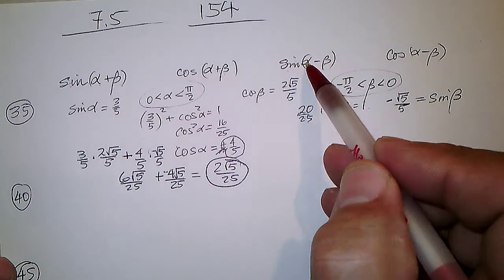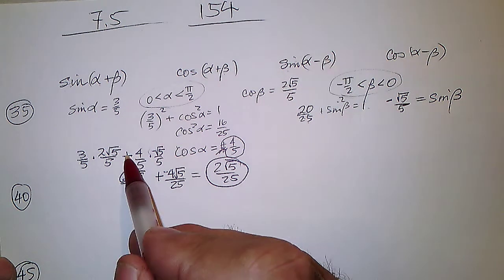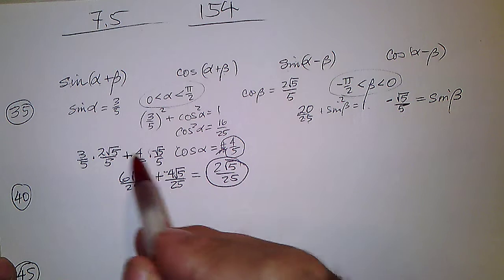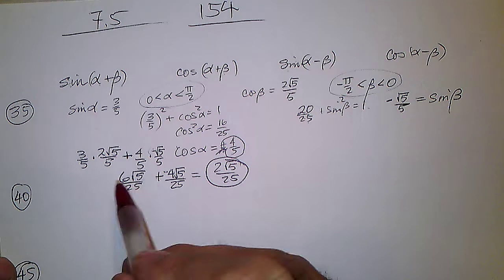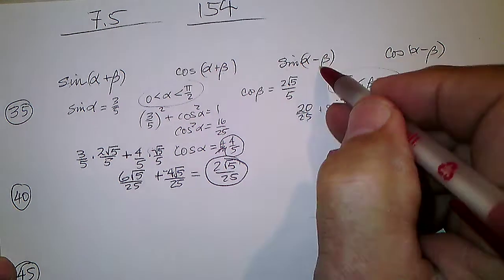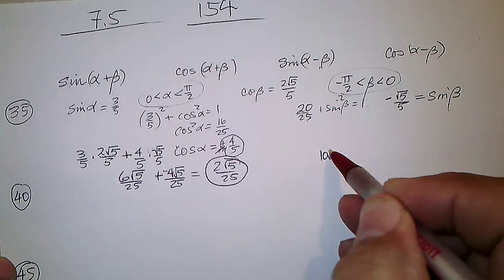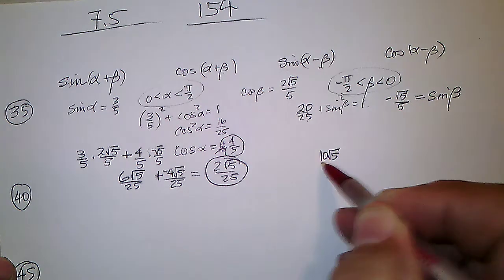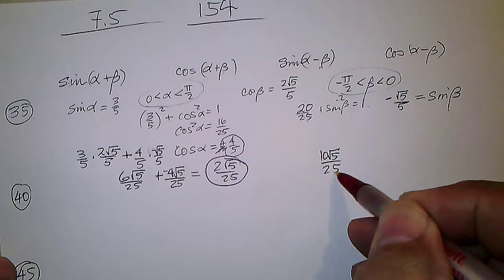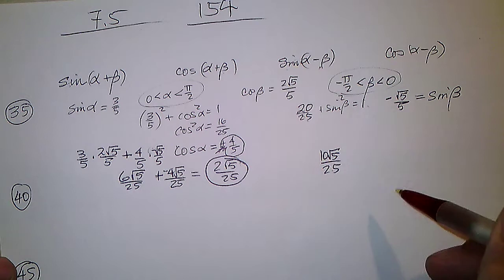For sine of alpha minus beta, the plus becomes minus and the minus becomes plus. So we get 10√5 over 25, which reduces to 2√5 over 5.